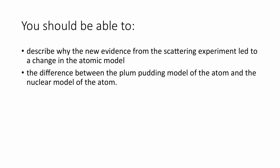Quick check: you need to be able to describe why new evidence from the alpha scattering experiment led to a change in the atomic model — that is, that the plum pudding model, where the positive charge was like a sponge spread over the entire atom, was actually refined to be concentrated in the nucleus in a tiny space at the centre of the atom. You also need to talk about the differences between the plum pudding model, where electrons are randomly scattered, and the Bohr model, where they orbit in discrete energy shells.